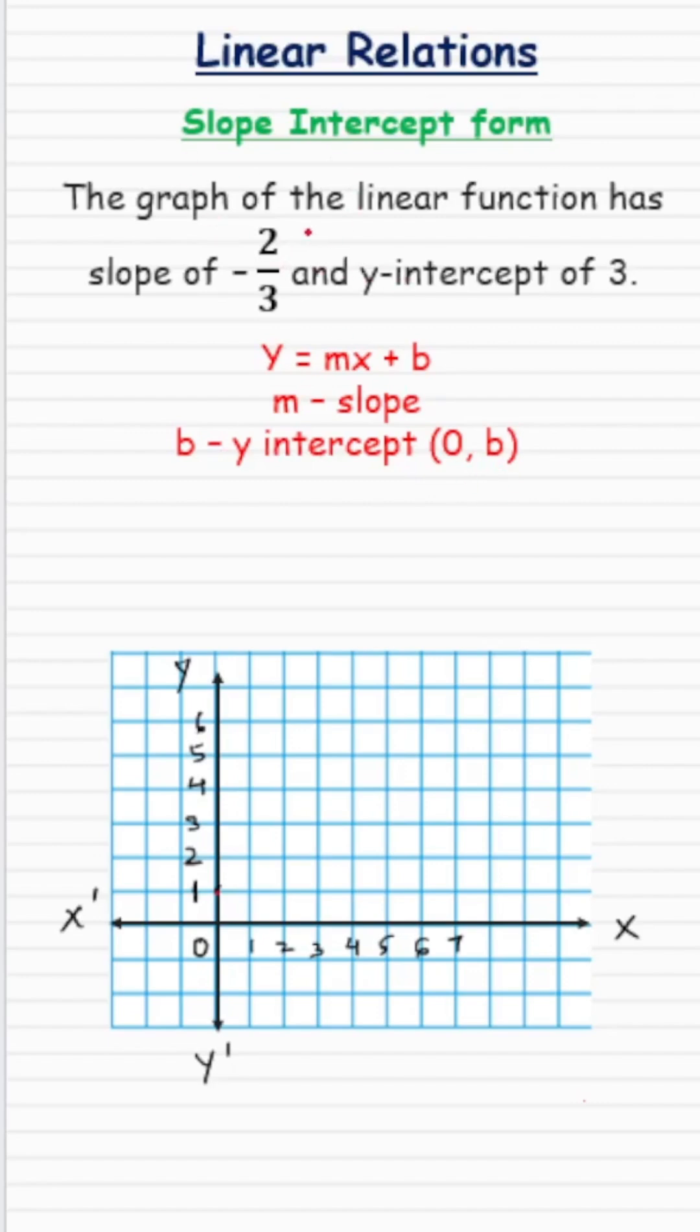In our question, the slope is given as negative 2 over 3 and the y-intercept is 3, so that's the value of b.